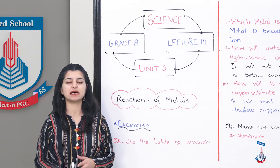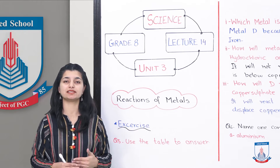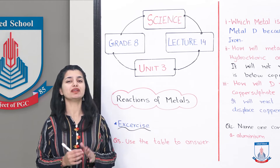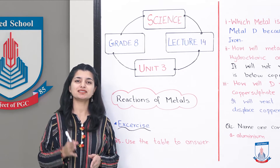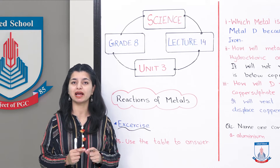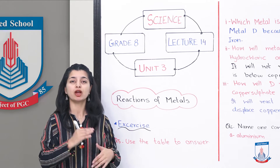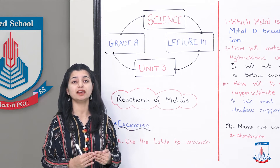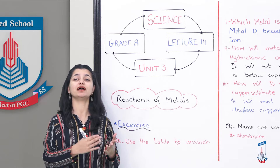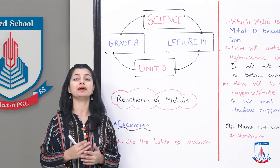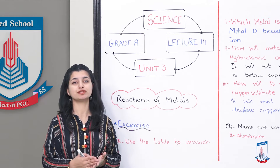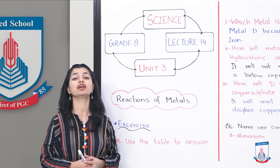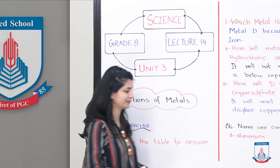After doing the first 4 questions, now we'll do questions 5, 6, 7, and 8 in this lecture. Under question number 5, there is a table. On one side there are metals labeled A, B, C, and D whose names they didn't give. On the other side of the table, they've given you different solutions: iron sulfate, copper sulfate, and silver nitrate. The question tells you how these 4 metals react with their solutions.